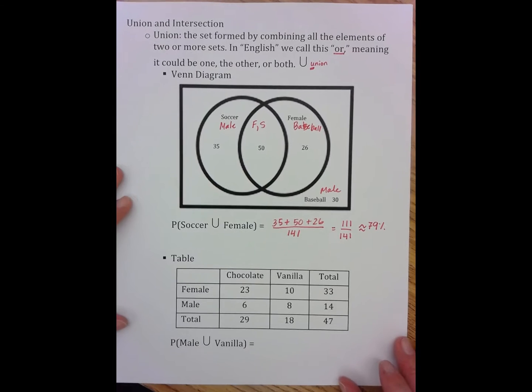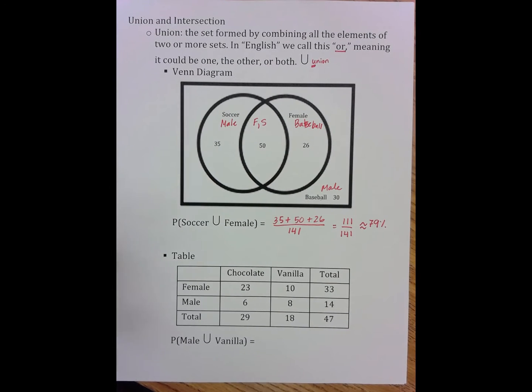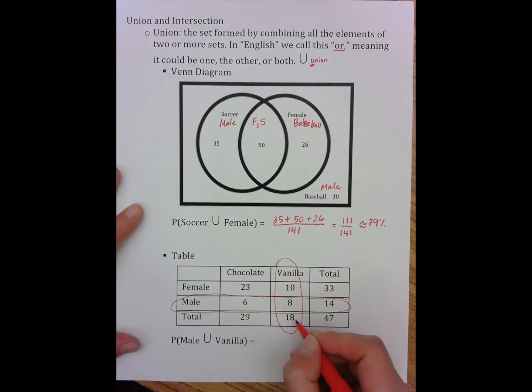Now looking at this in a table. In a table, when I'm looking at this male and vanilla, I'm basically looking at everyone who is male and everyone who likes vanilla. There's a problem, though. I want you to look very carefully at what I circled. Initially, you're thinking, okay, vanilla,